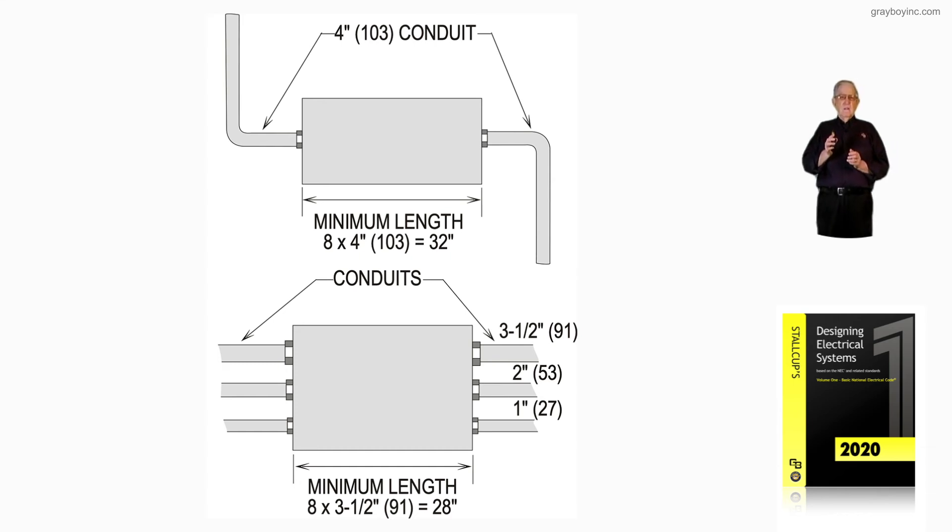Anywhere from a half to a one-inch between the conduit so that the fittings will, you can make up the fittings. You don't have lock nuts lapping over other lock nuts, but standard boxes is going to provide this for you.